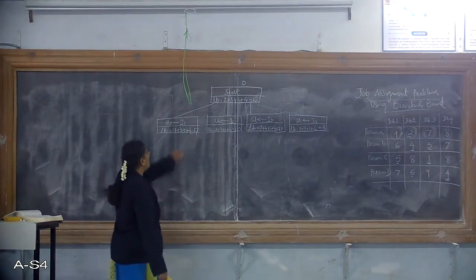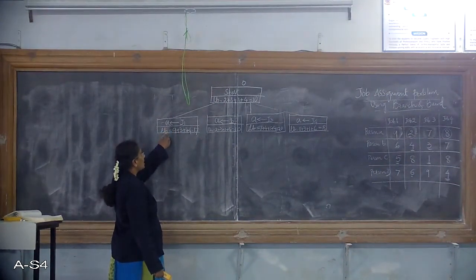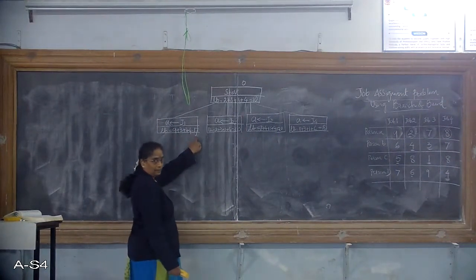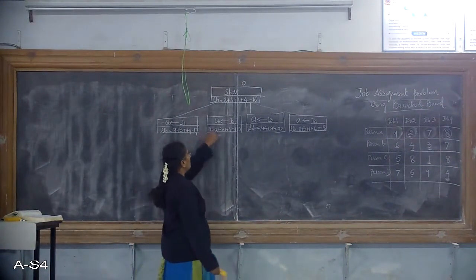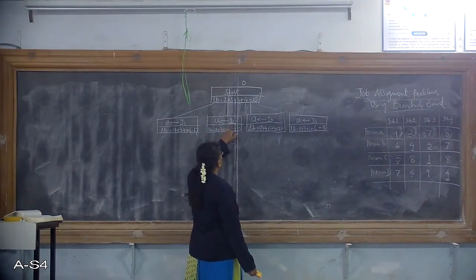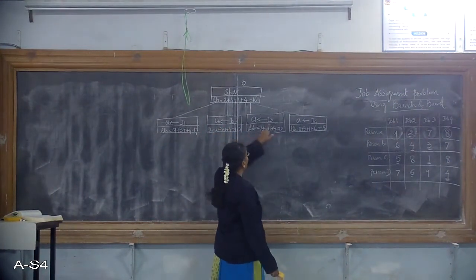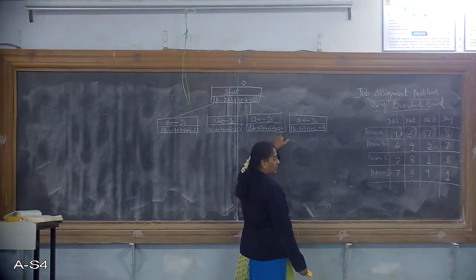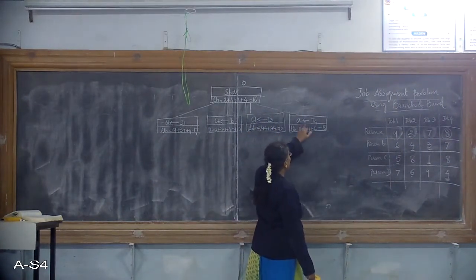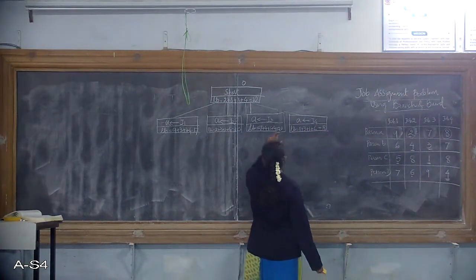If you want to assign job J1 to person A, the total cost associated is 17. When you want to assign job J2 to person A, the LB value is 10. Job J3 to person A, the LB value is 10. And job J4 to person A gives 18 as a lower bound value.